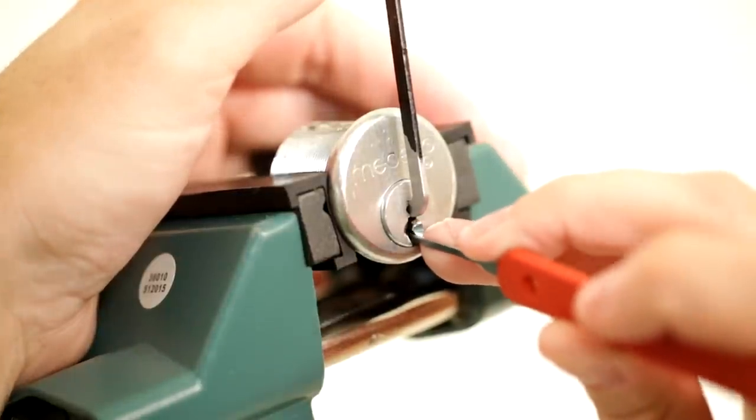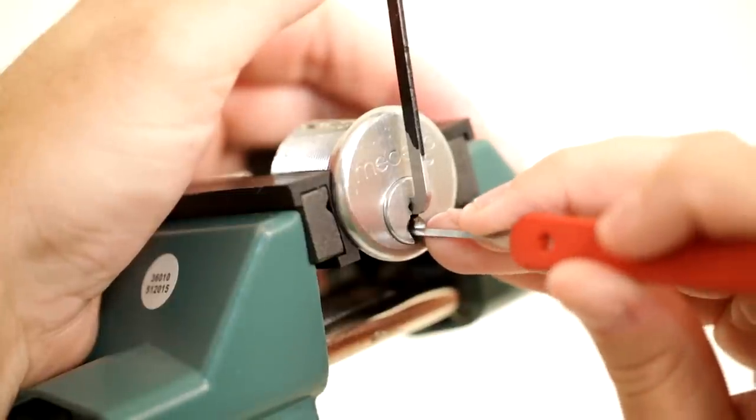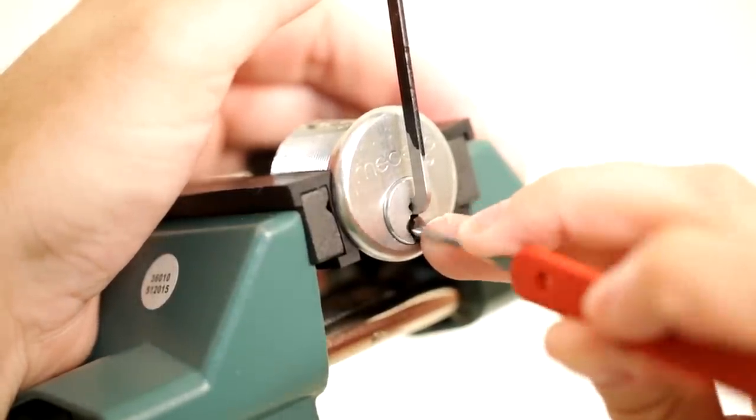Pin two feels a little bit different than everybody else. So I'm thinking pin two must be in a false gate here. There it is.